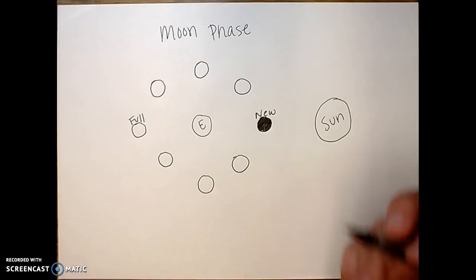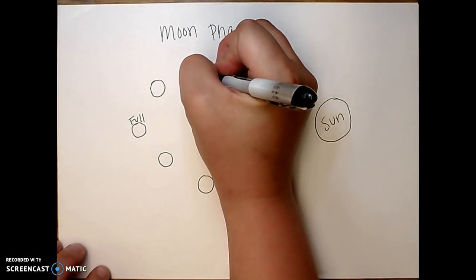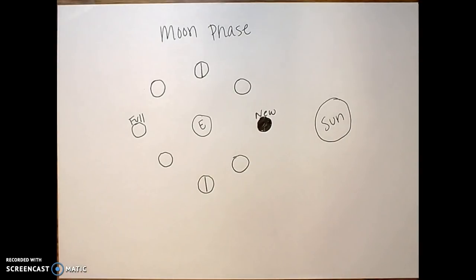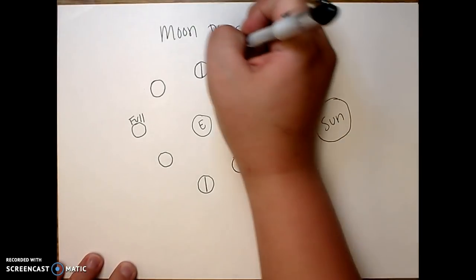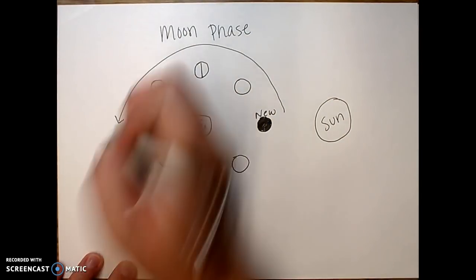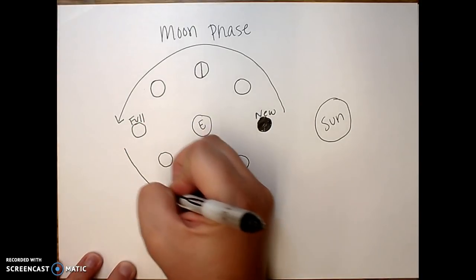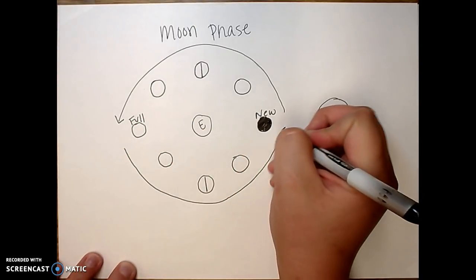The next two are my two major phases, which are my two quarters. Now in order to do that, I need to remember that everything in space is going to go counterclockwise. So we're going to start with our new moon and we're going to draw an arrow going counterclockwise. And then from full to new, I'm going to draw another arrow counterclockwise.